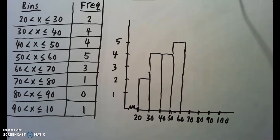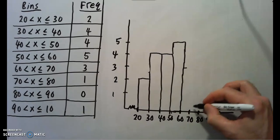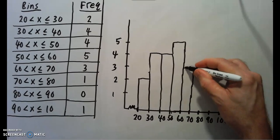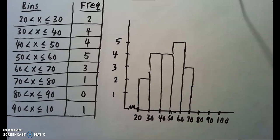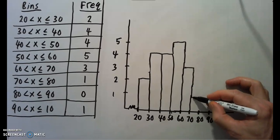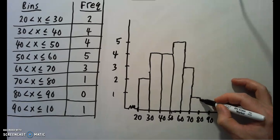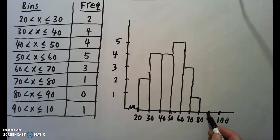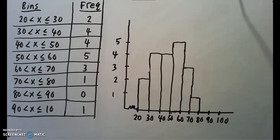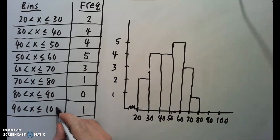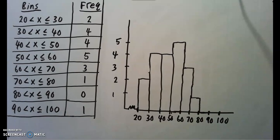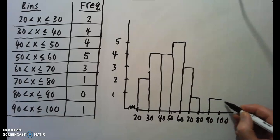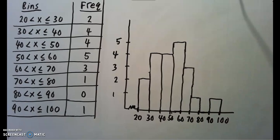And, then 60 to 70, frequency 3. So 3 is about here. And, 70 to 80, we have frequency 1. Now, 80 to 90, we have frequency 0. So it would just be right there. No height. And, the last one, 90 to 100. It has frequency 1. So this would be our frequency histogram.